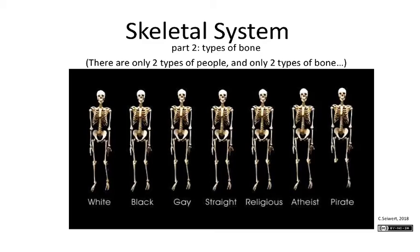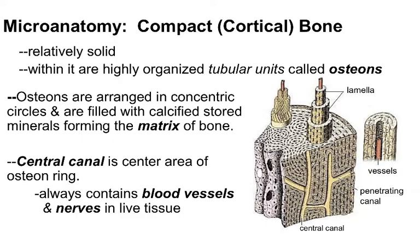Now we're going to talk in more detail about the microstructure of compact and spongy bone. Compact bone is also referred to as cortical bone because it forms the outer layer of all of our bones. It's the most solid bone, meaning it has — for any amount of volume — the greatest density of mineralized collagen.